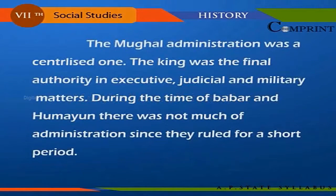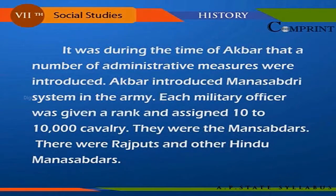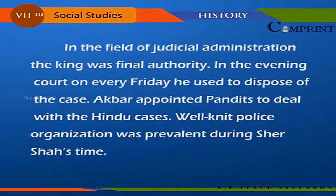Mughal Administration. The Mughal administration was a centralized one. The king was the final authority in executive, judicial, and military matters. During the time of Babur and Humayun, there was not much administration since they ruled for a short period. It was during the time of Akbar that a number of administrative measures were introduced. Akbar introduced the Mansabdari system in the army. Each military officer was given a rank and assigned 10 to 10,000 cavalry. They were the Mansabdars, including Rajput and other Hindu Mansabdars. In the field of judicial administration, the king was the final authority. In the evening court on every Friday, he used to dispose of cases. Akbar appointed pundits to deal with Hindu cases. A well-knit police organization was prevalent during Sher Shah's time.